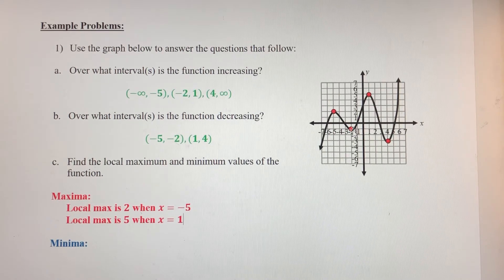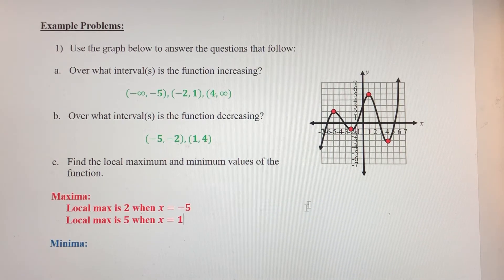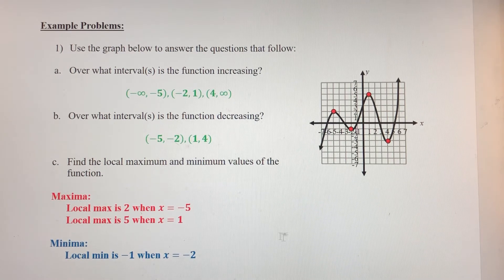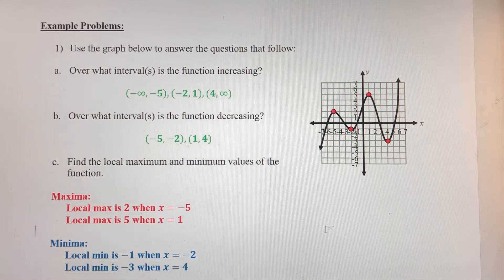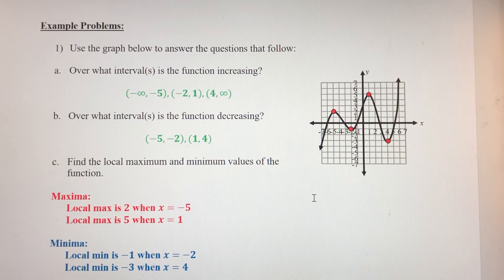Minimum values — we've got two of those. The Y-coordinate at the first location is negative 1, so there's a local min at negative 1 when X is equal to negative 2. And then the second minimum value is negative 3 when X equals positive 4. That's how you determine local max and min values within a function.